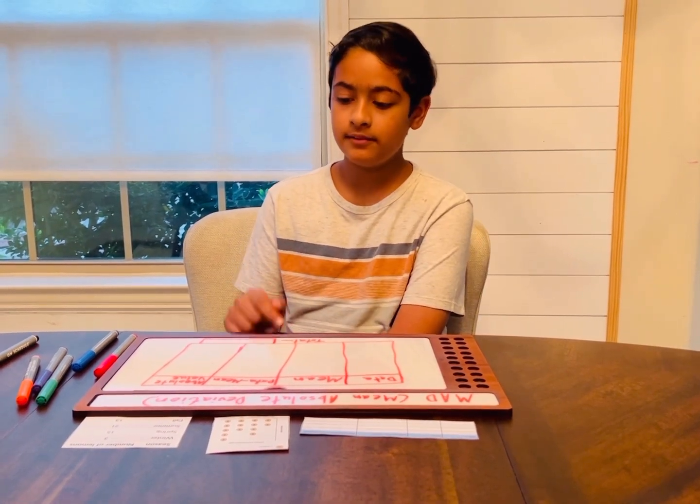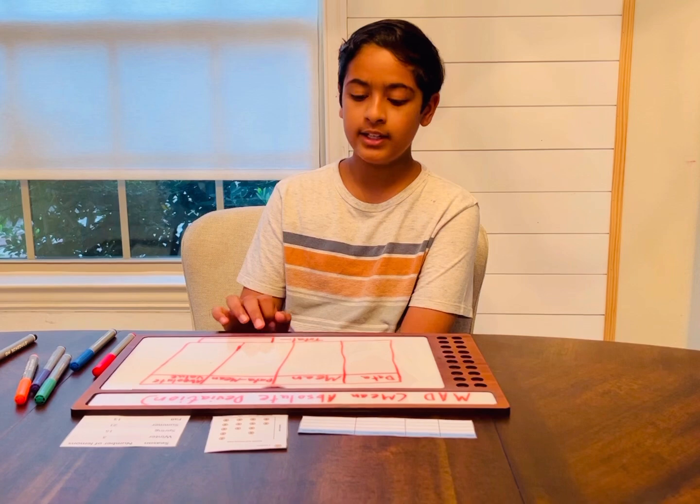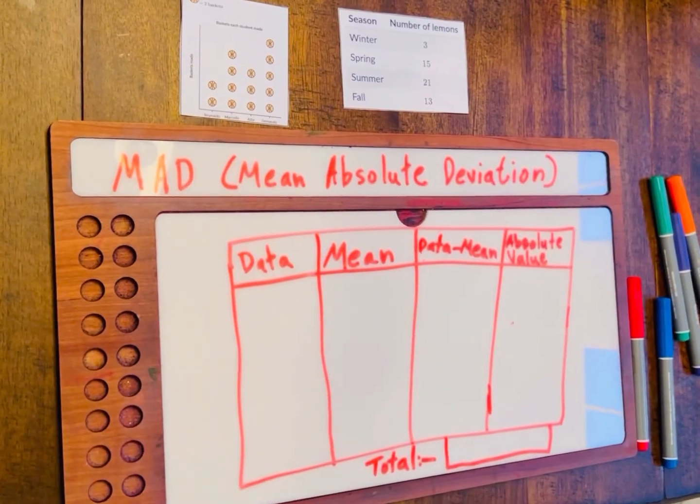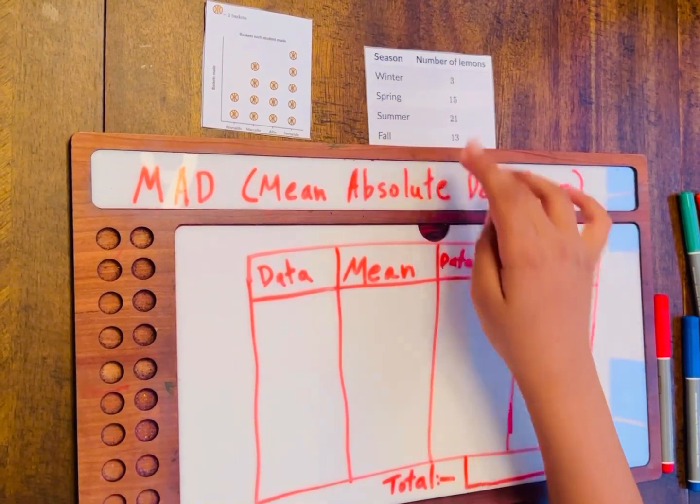Then, you have to find the mean of the absolute values, which you will write in the total. And that is nothing but the MAD. I have two examples. I'm going to be using this example first.